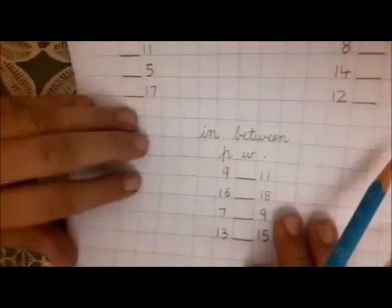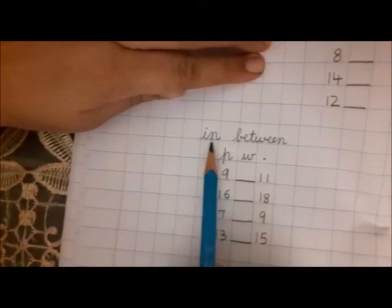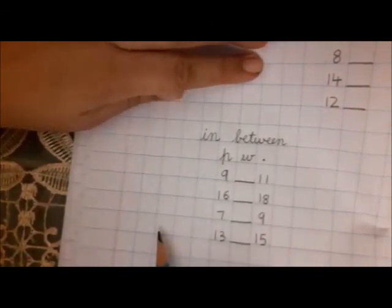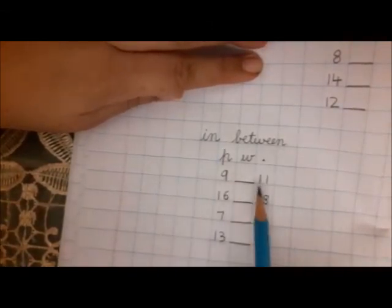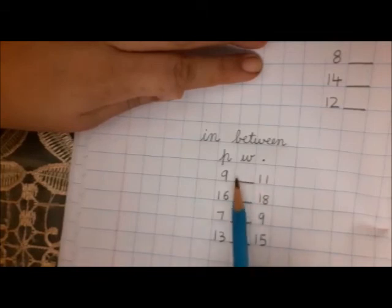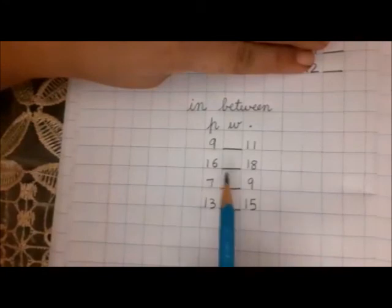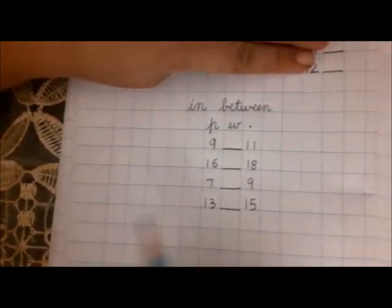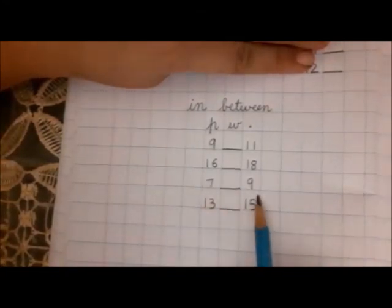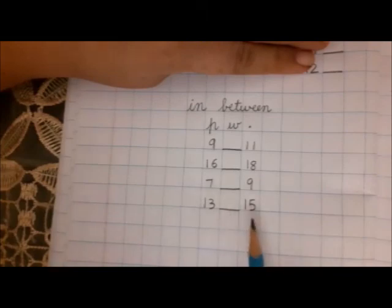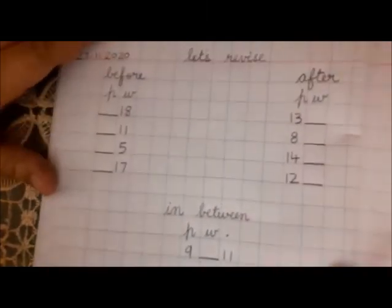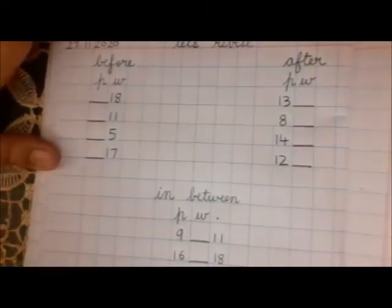And over here is 'in between' — matlab beech mein. 9 dash 11: what comes in between 9 and 11? Same way, 16 dash 18: 16 aur 18 ke beech mein kya aata hai? 7 dash 9. 13 dash 15. You will do this yourself.